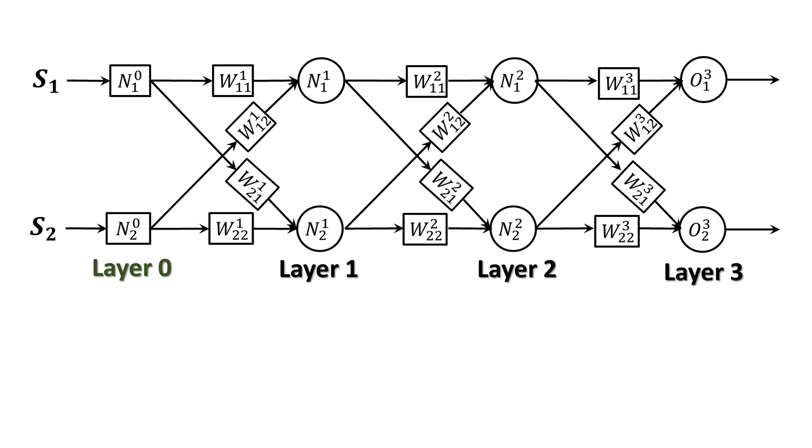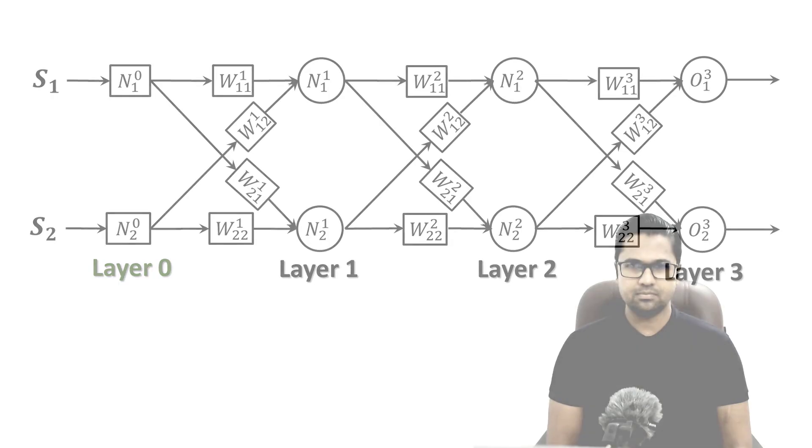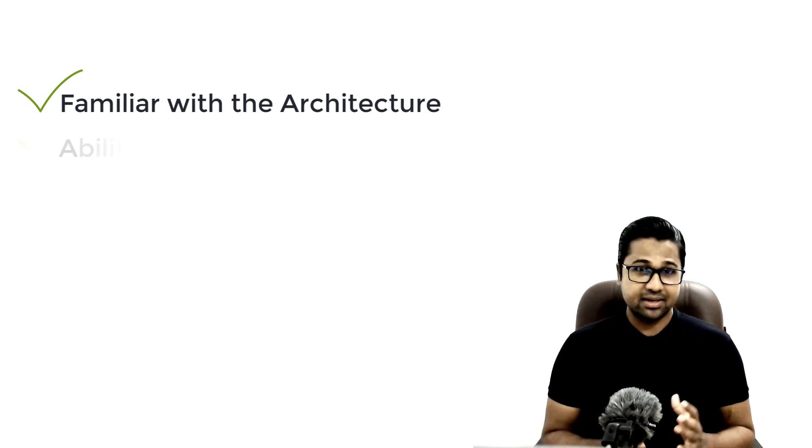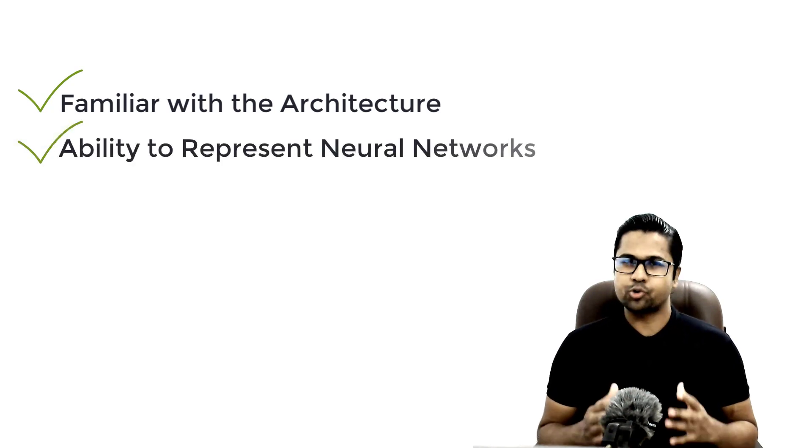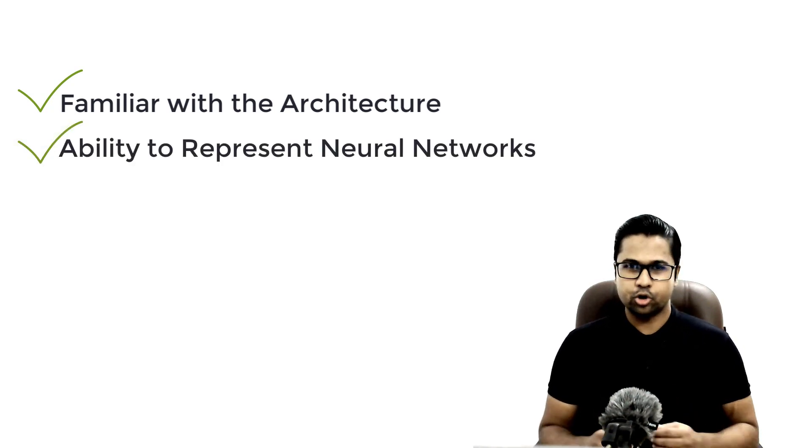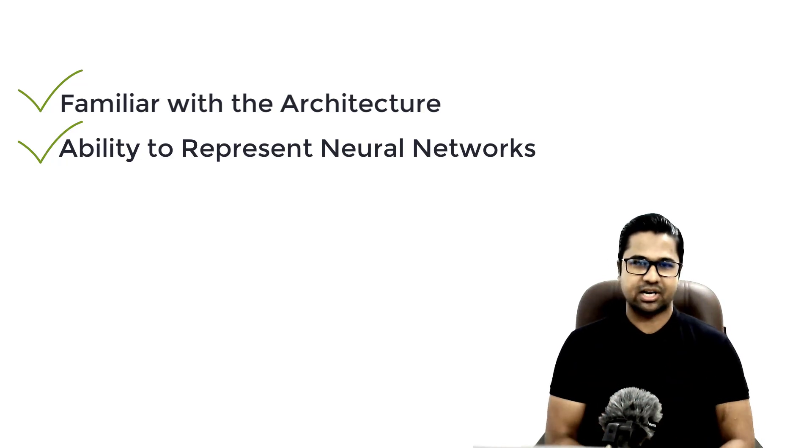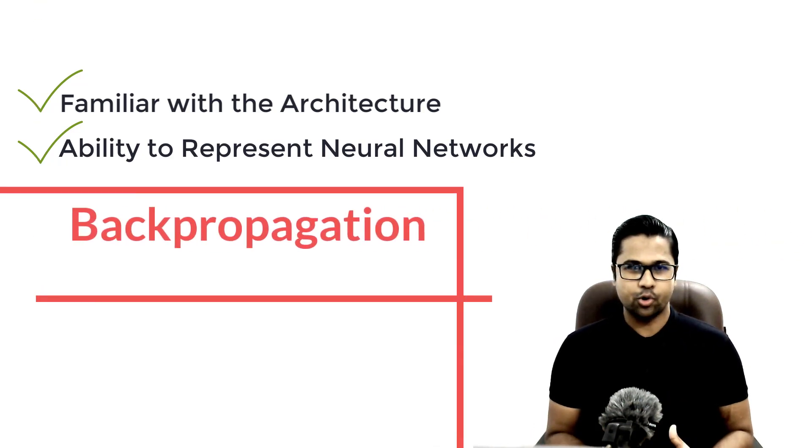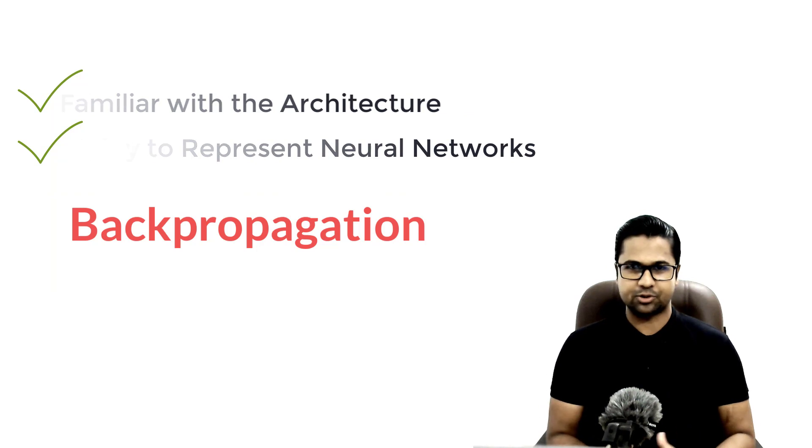So, this is how we represent a multi-layer neural network. Now, you are familiar with the architecture of multi-layer neural network. And I believe you can represent any neural network no matter how many nodes and layers are there. The next lesson is about back propagation algorithm. The learning rule of multi-layer neural network.